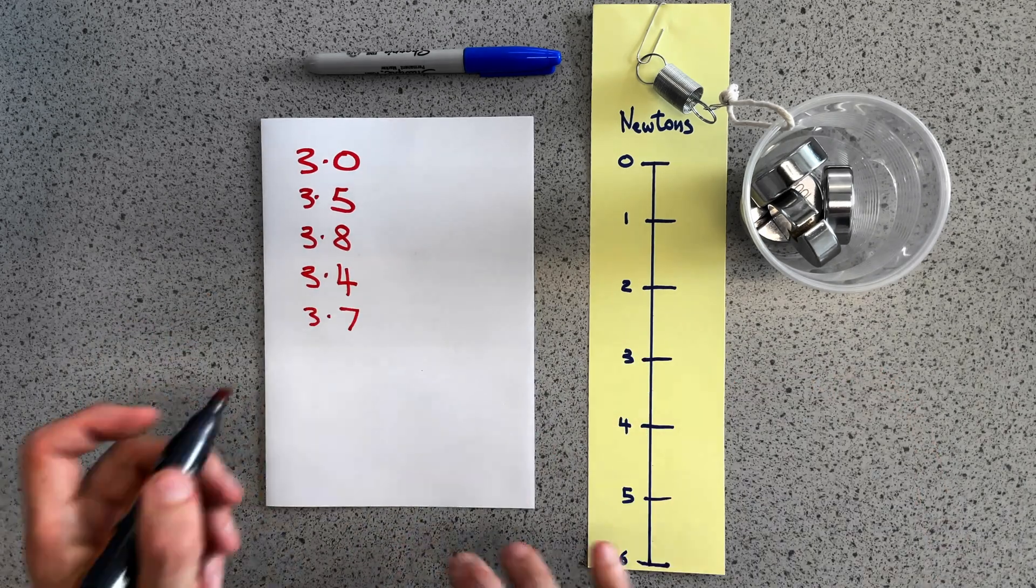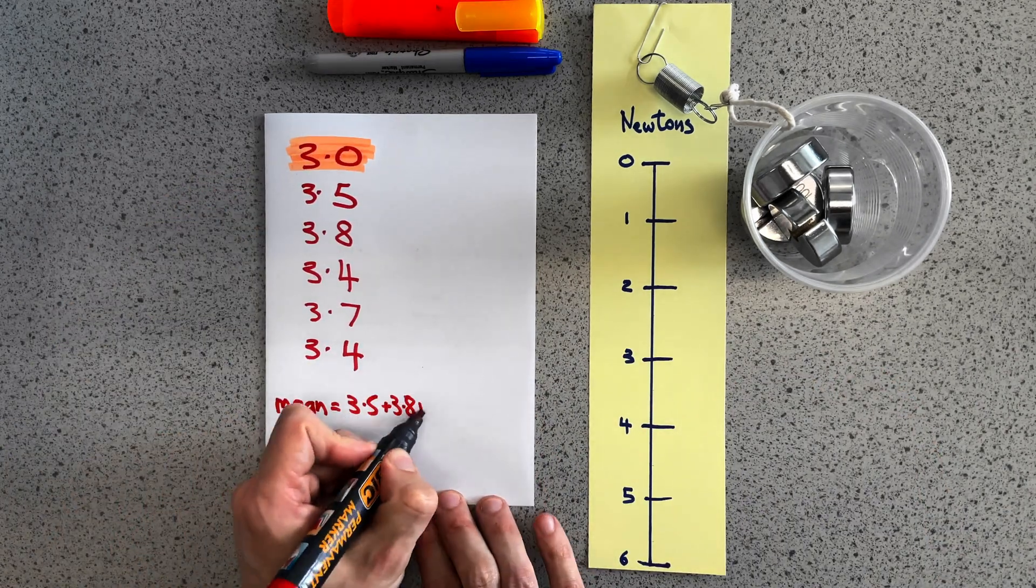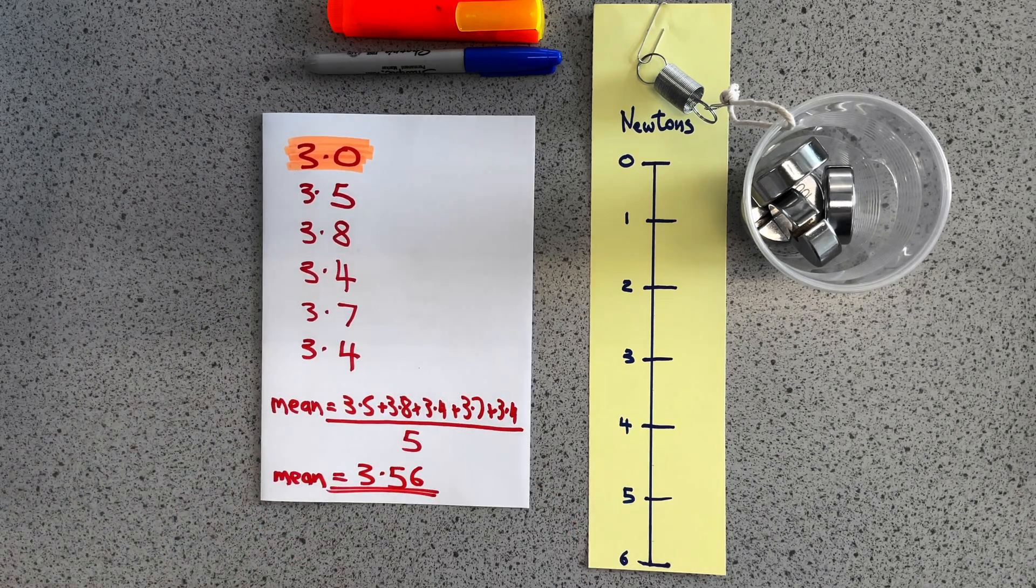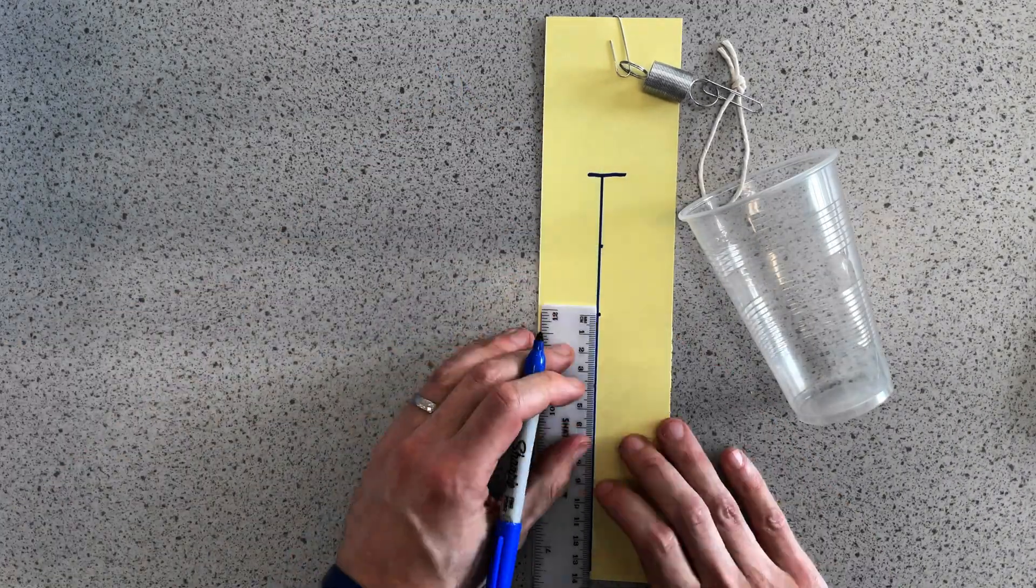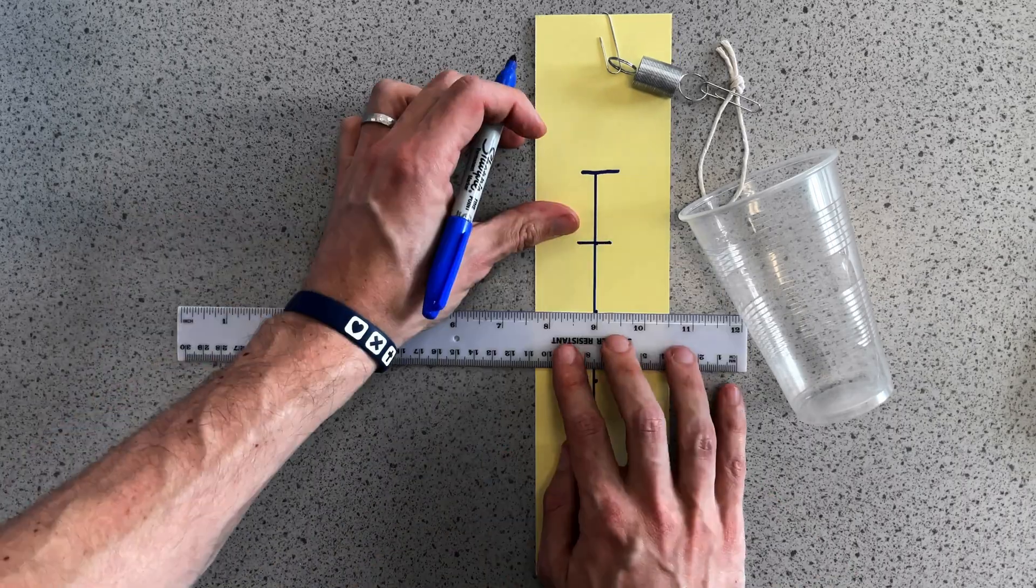So to reduce that as much as possible I can take my different measurements, find the mean and then I can make a new force meter with that mean reading as the distance between all my marks.